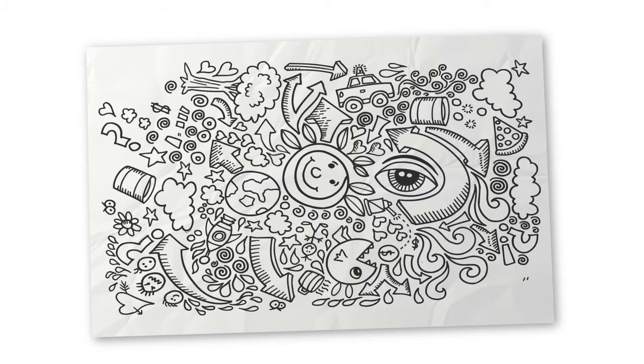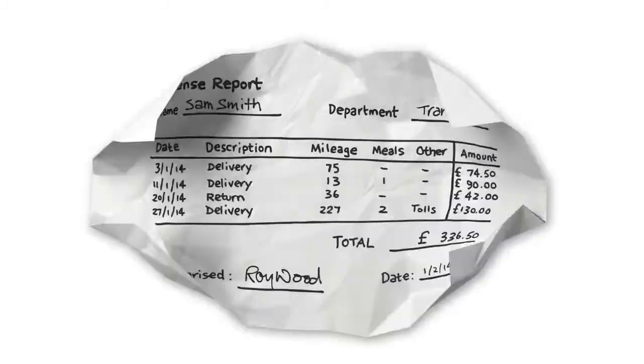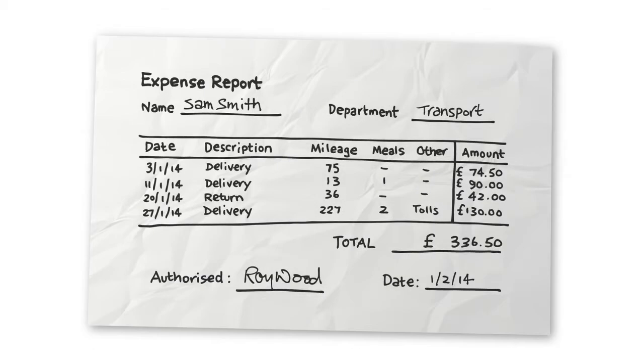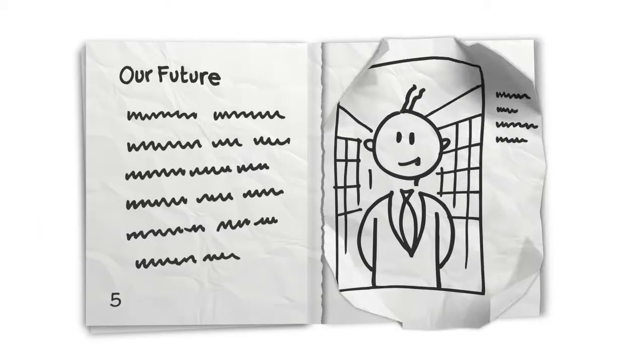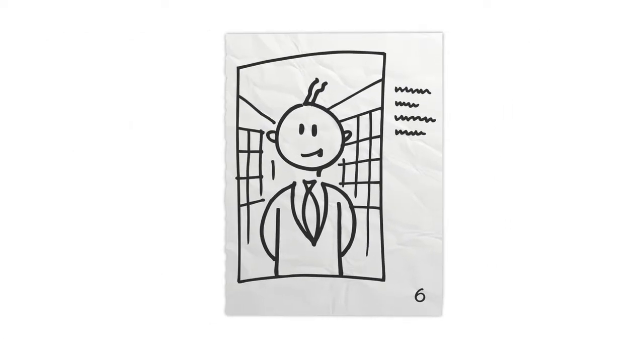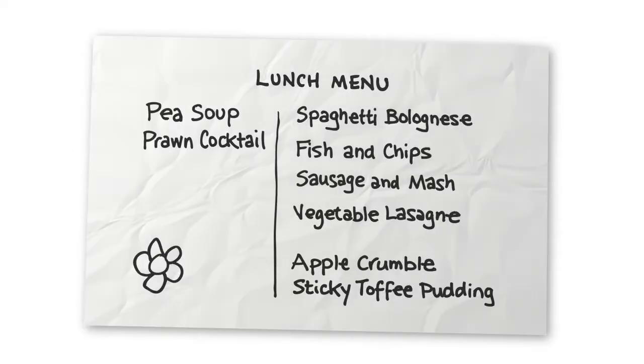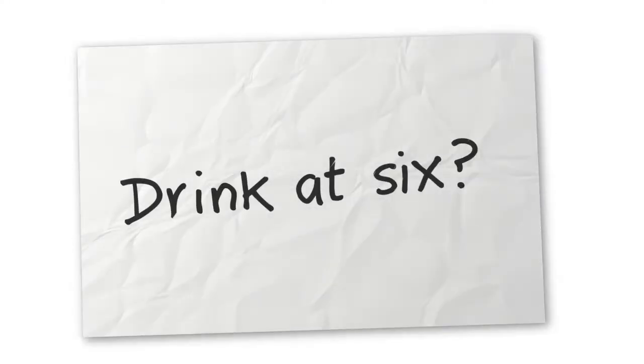This simple little doodle used to be an expense report. Before that, it was page six of the company brochure, the canteen lunch menu, and a quick note from Dave in purchasing to Jenny in marketing, because this sheet of paper is quite special.